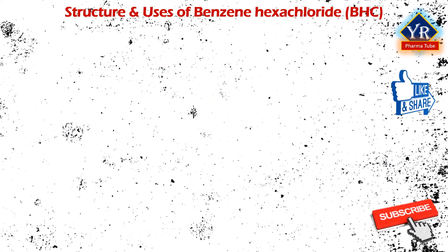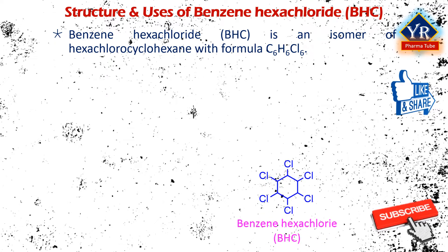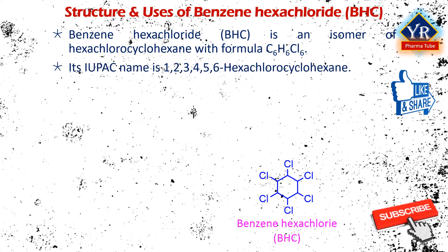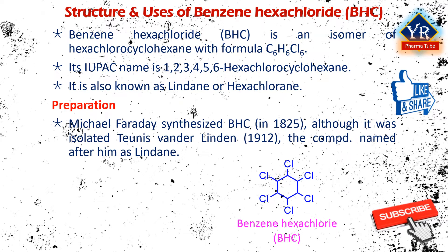Structure and uses of benzene hexachloride. Benzene hexachloride, abbreviated BHC, is an organochlorine chemical compound. It is an isomer of hexachlorocyclohexane with the chemical formula C6H6Cl6 — meaning the structure has six carbon atoms, six hydrogen atoms and six chlorine atoms. Its IUPAC name is 1,2,3,4,5,6-hexachlorocyclohexane. It is also sometimes known as lindane or hexachlorine. English scientist Michael Faraday synthesized BHC for the first time in 1825, although it was first isolated in 1912 by Dutch chemist Dines van der Linden — that is why the compound is also named lindane after him. BHC is prepared by light-induced chlorination of benzene. In the presence of light and heat, benzene undergoes addition reaction with three molecules of chlorine to give benzene hexachloride.